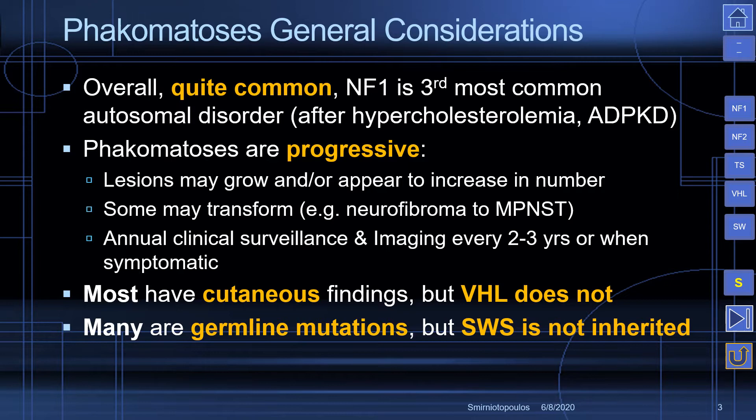Let's talk about some general considerations for the phacomatoses. Overall, they're quite common. In fact, neurofibromatosis type 1 is the third most common autosomal dominant disorder. The phacomatoses tend to be progressive — lesions may grow and/or appear to increase in number as the patient ages. Some lesions may transform.